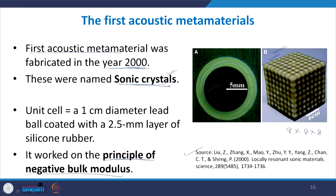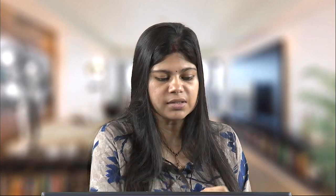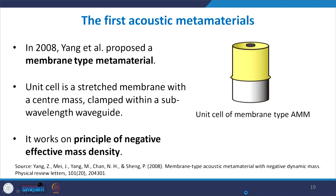The second major acoustic metamaterial was proposed in 2004 by Liu and Chan — a double negative acoustic metamaterial theoretically proposed to have negative bulk modulus and negative effective mass density, though experimental verification is still not concrete. Then finally in 2008, the first complete model of a membrane-type metamaterial came into being, and after this lecture we will begin discussion of this membrane-type metamaterial in detail.